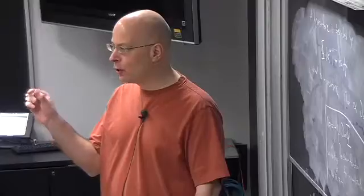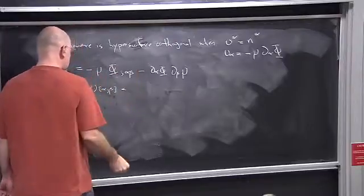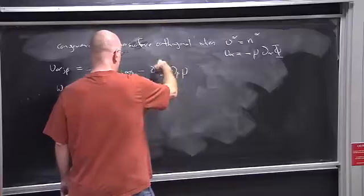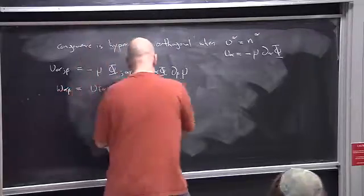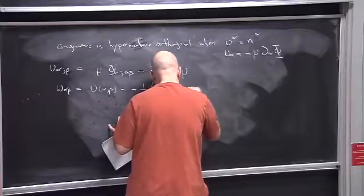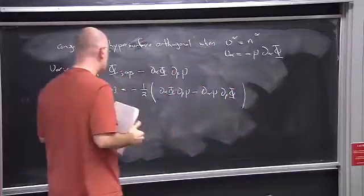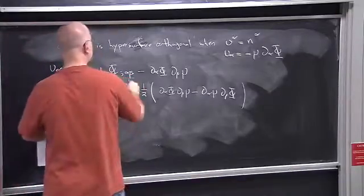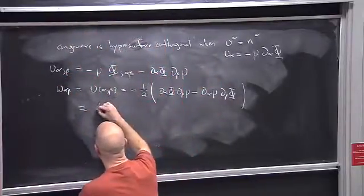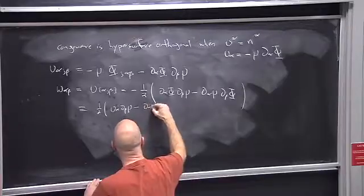So that first term is a symmetric tensor, and the anti-symmetric combination just involves the second term. We get: ω_αβ = 1/(2μ) (∂_α φ ∂_β μ – ∂_α μ ∂_β φ). Recalling that u_α = –μ ∂_α φ, I can rewrite this as (1/2μ)(u_α ∂_β μ – ∂_α μ u_β).